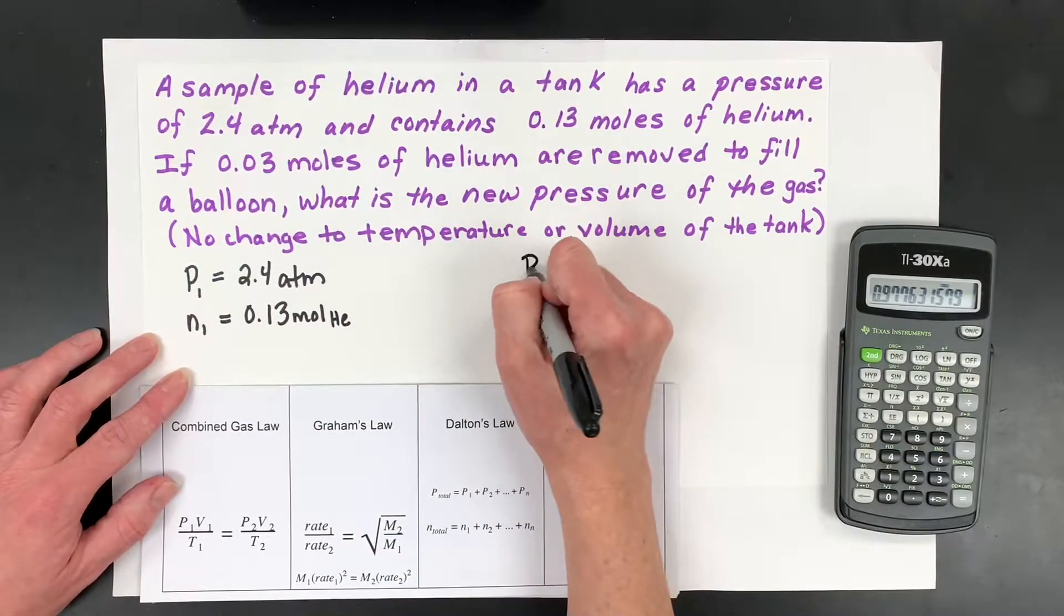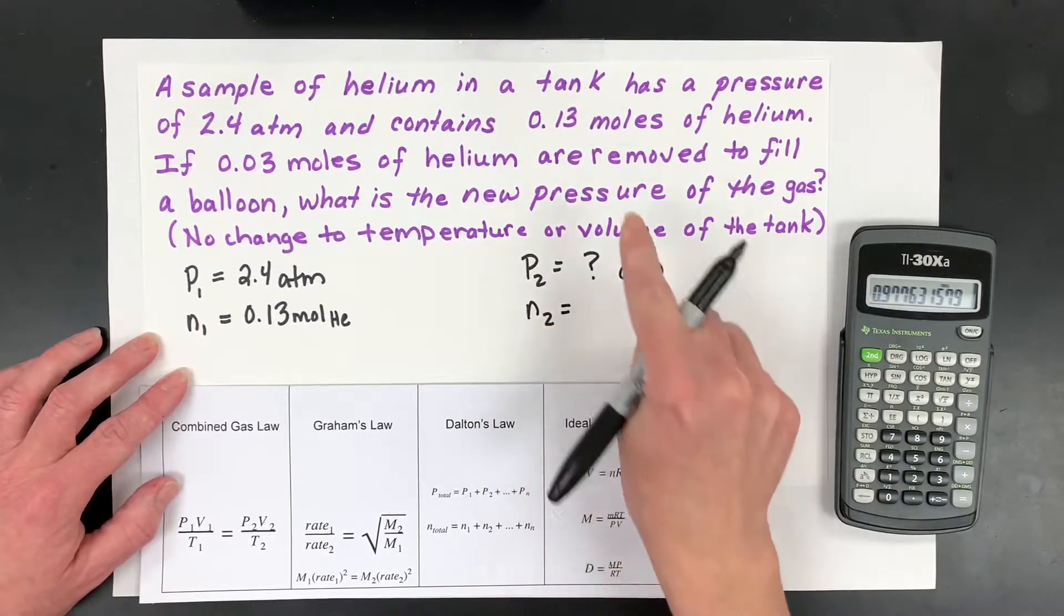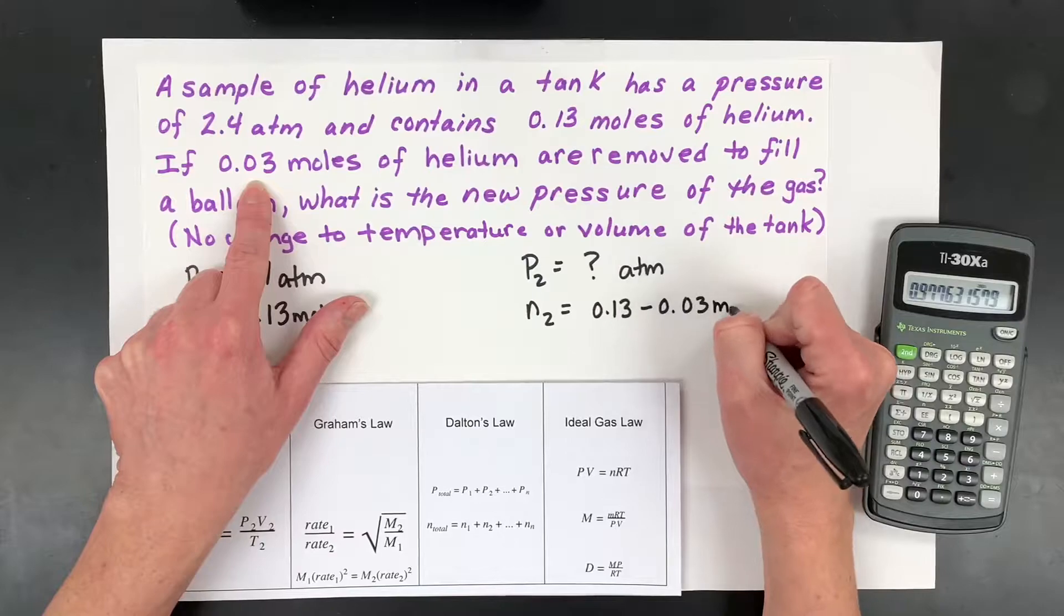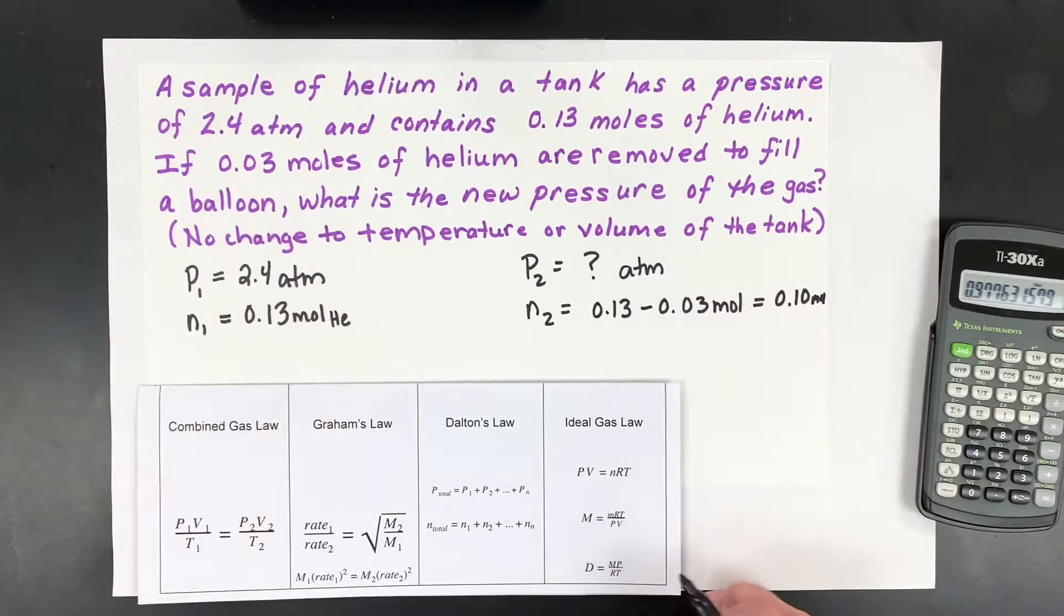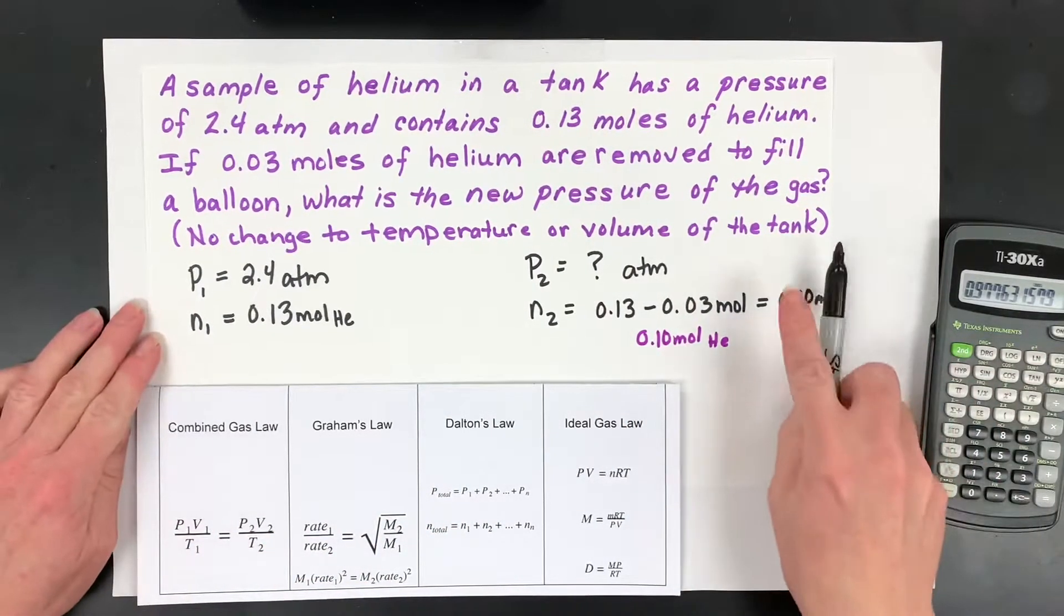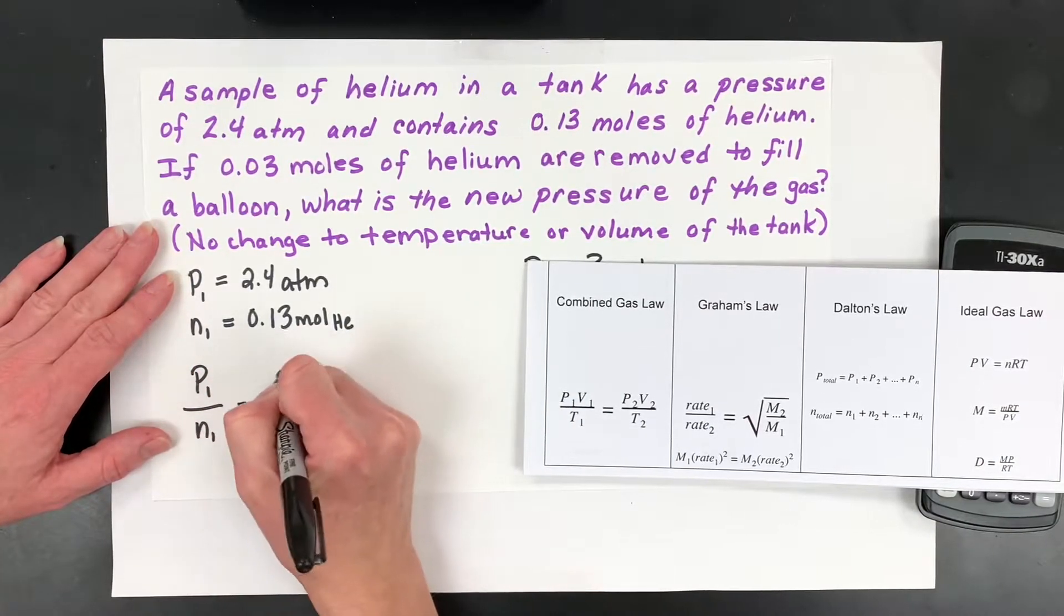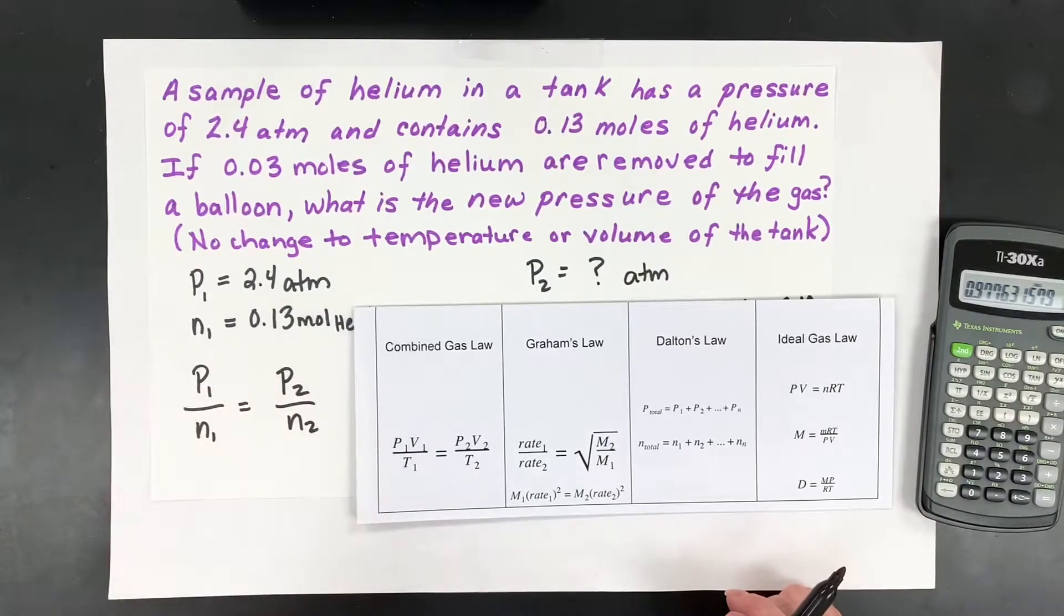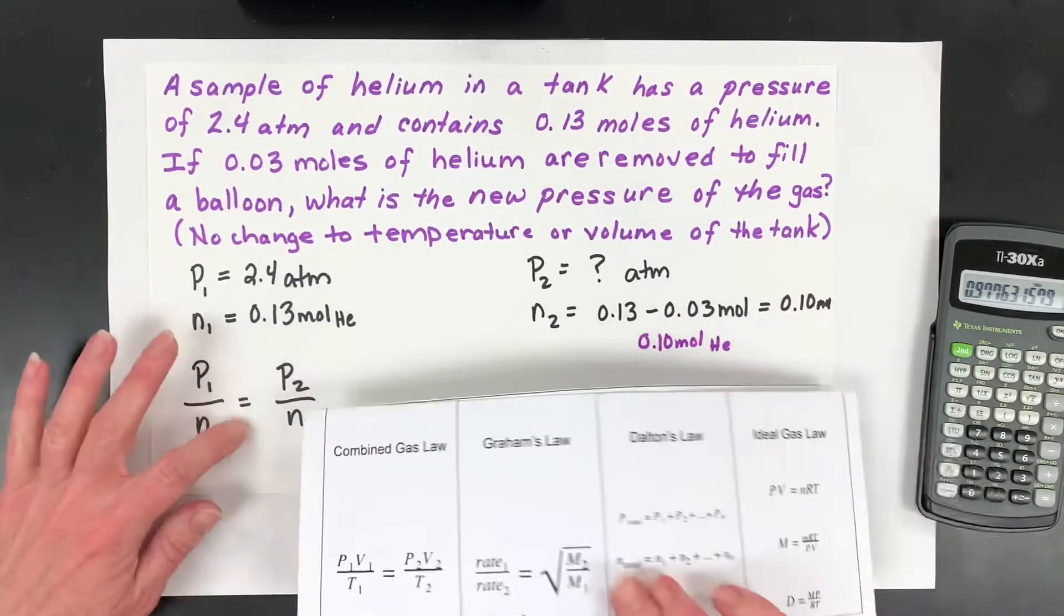So my initial pressure was 2.4. And my initial moles, remember we use N for moles, is 0.13 moles of helium. Now I'm trying to find my new pressure. And then our new moles. Now be careful. It says we took 0.03 out. So 0.13 minus 0.03, and I did kind of easy numbers here. So we have just simple 0.10 moles. 0.10 moles of helium that are left inside that tank. So what it is, is there is a correlation between these two. And this is a version that you may want to add to the top page of your notes. That these two can be related. To me, this is a version of Dalton's Law that I think is super helpful.